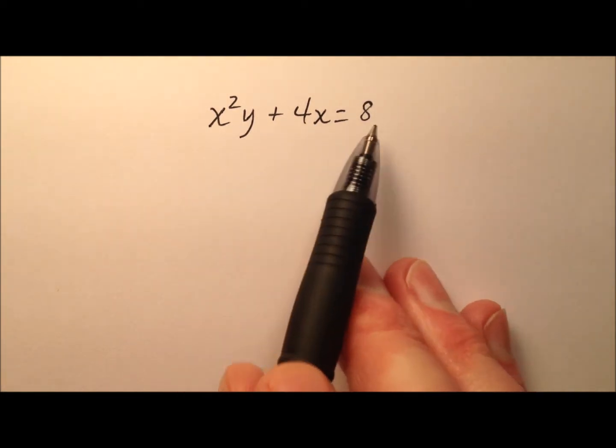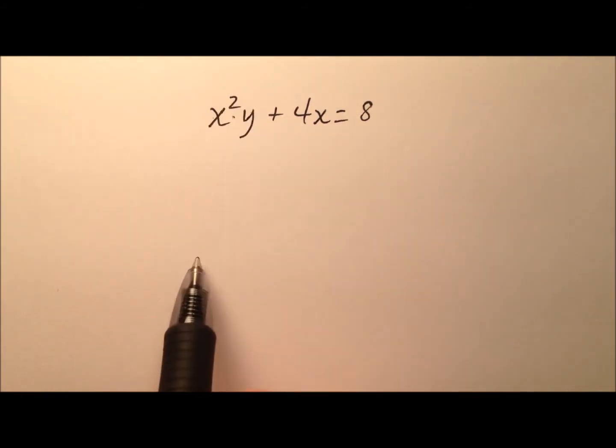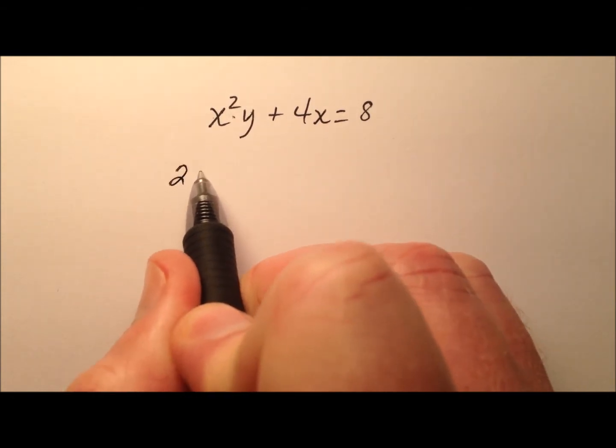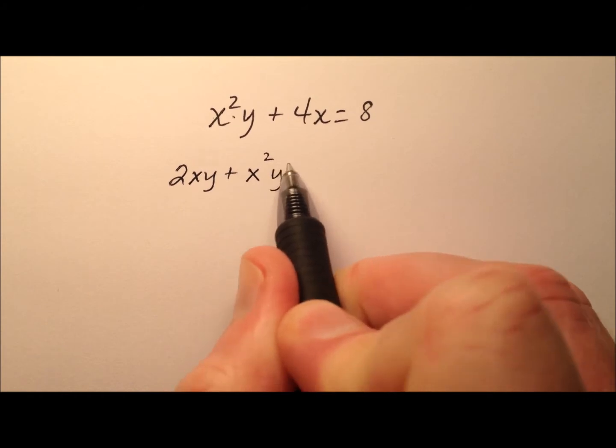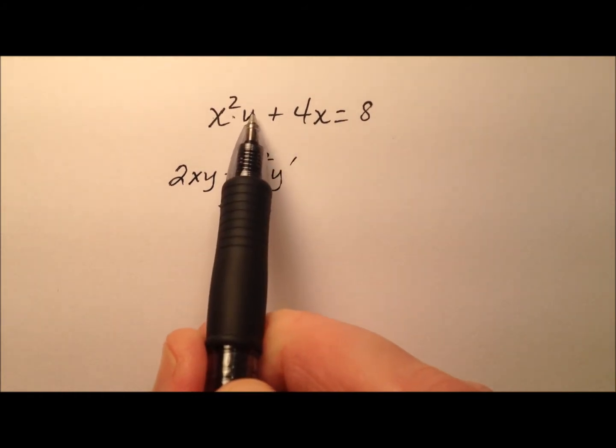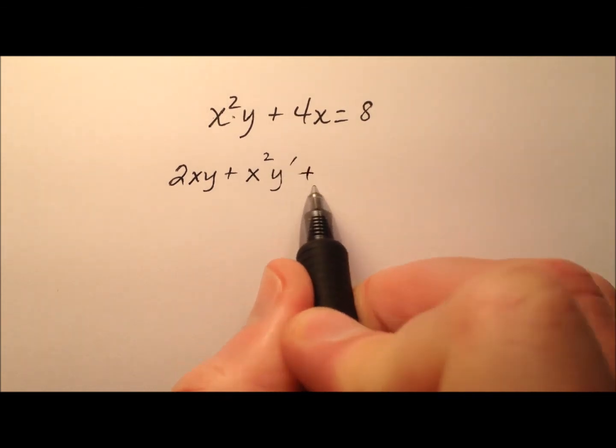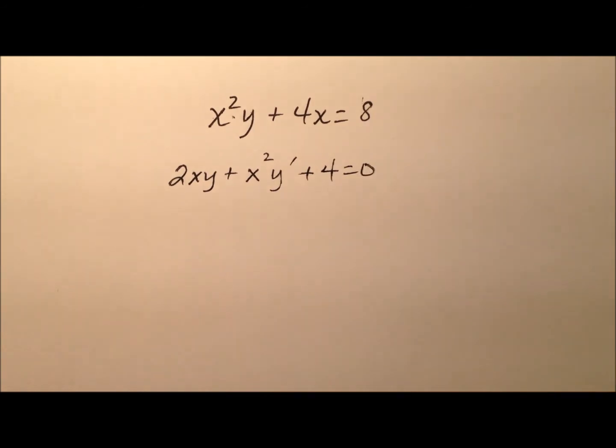So the first thing we need to do is go term by term and differentiate. The first term x squared y is going to be product rule, so the derivative of the first times the second plus the first times the derivative of the second. The derivative of y is 1, but since we differentiated a y term we'll need a y prime in there. The derivative of 4x is 4 and the derivative of our constant is 0.